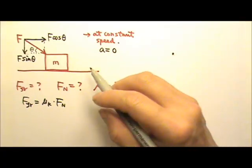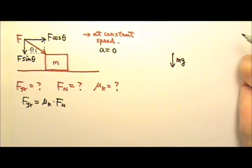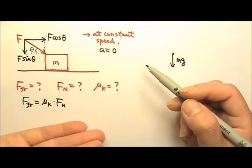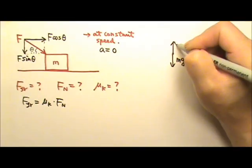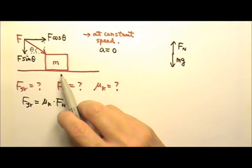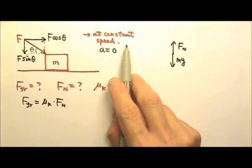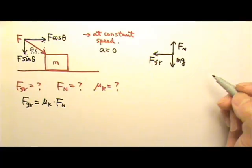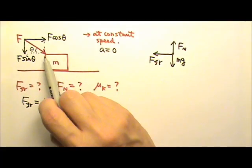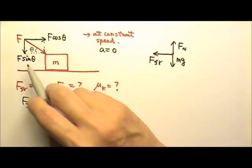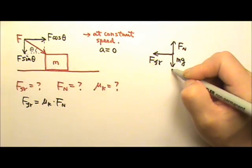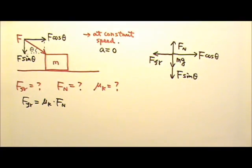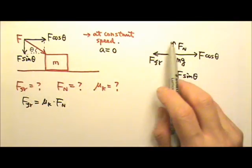Now let's draw the forces. You have the non-contact force, mg, going straight down. The box is touching the contact surface, which gives you normal force and friction. Normal force pushes the box upward, perpendicular to the table. Since the box slides to the right, the kinetic friction acts against the sliding motion — so friction goes to the left. The box is also touching the slanted applied force, so instead of drawing the slanted force, we draw its two components: F sine theta going down and F cosine theta to the right. The box is not touching anything else, so we're done with the force diagram.